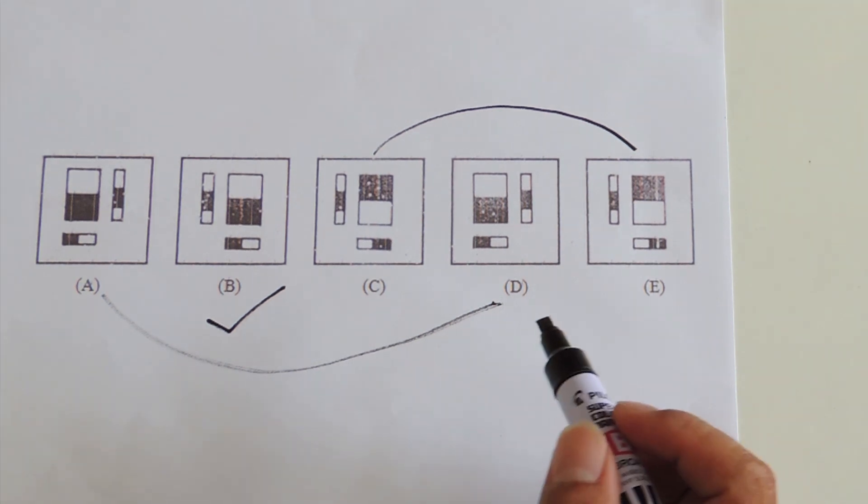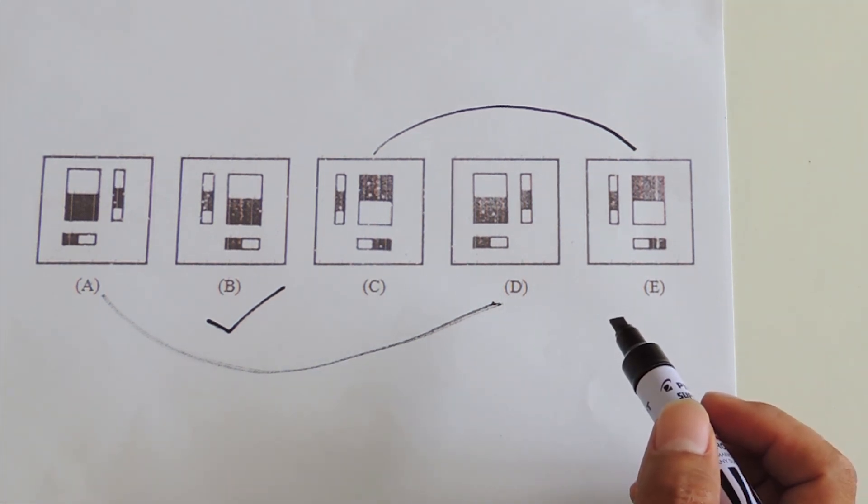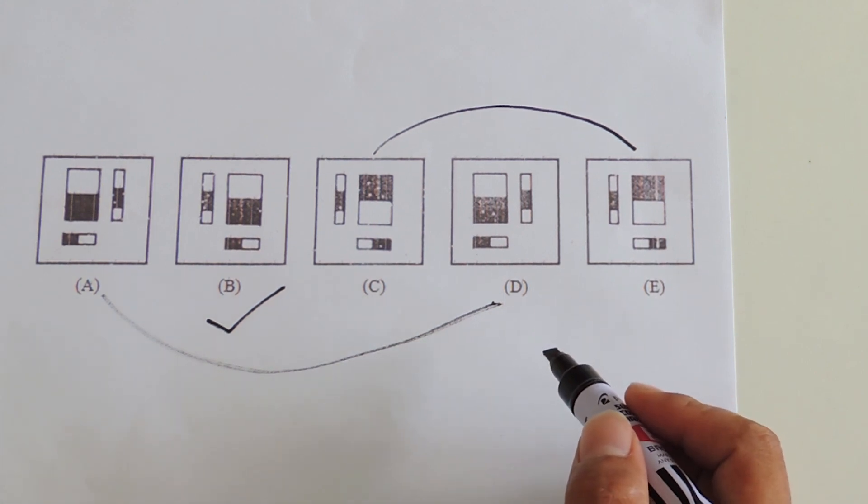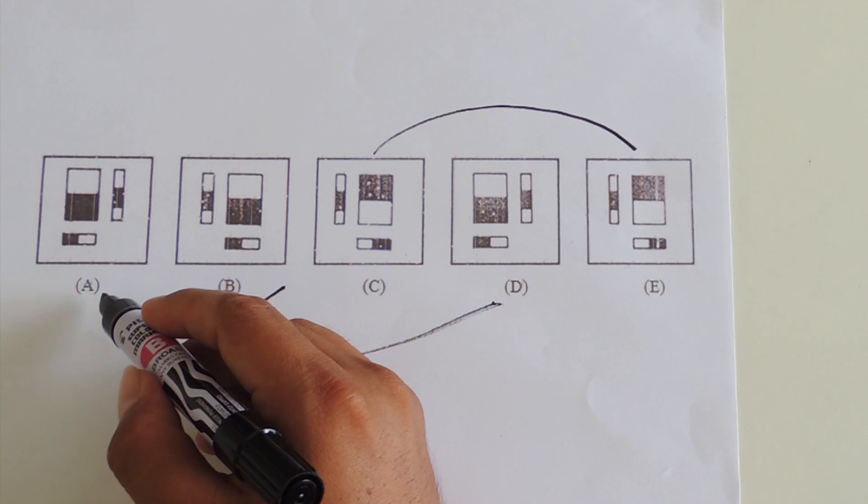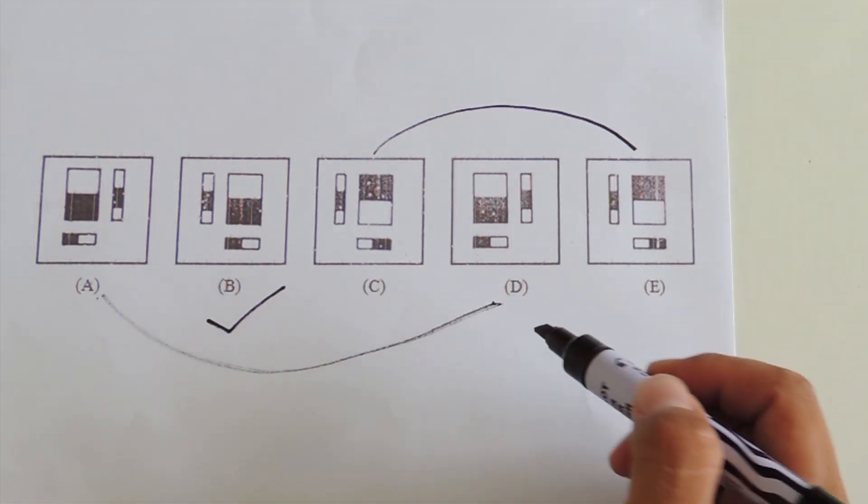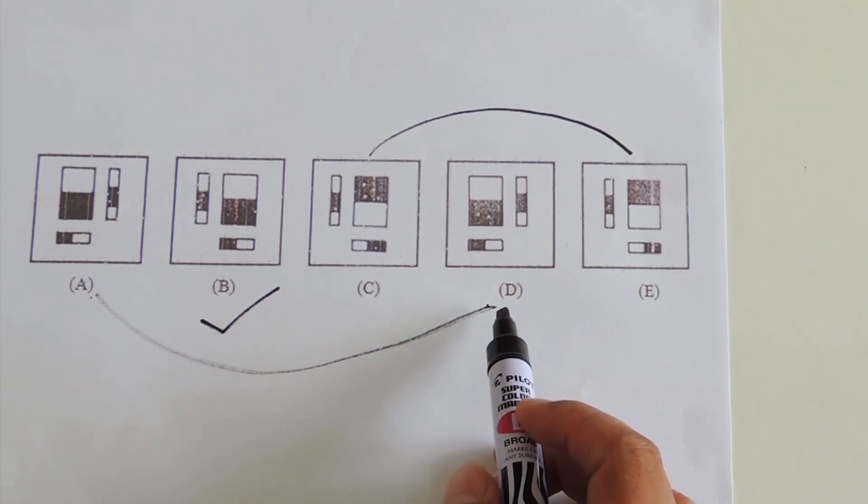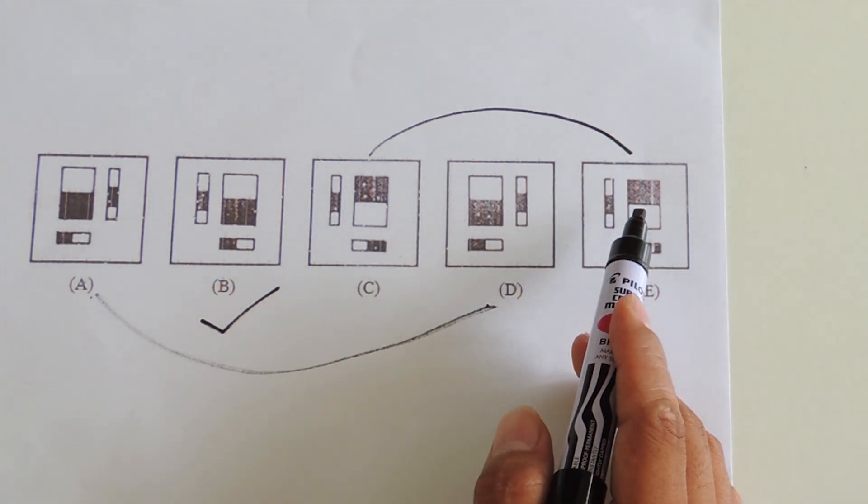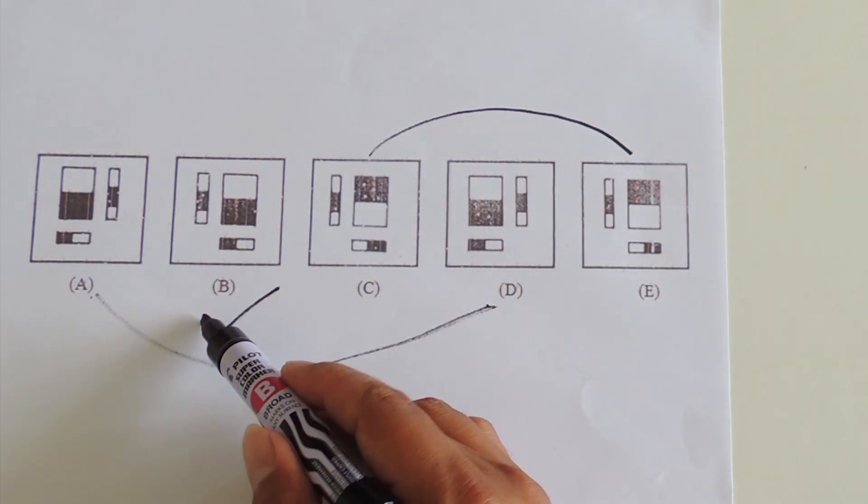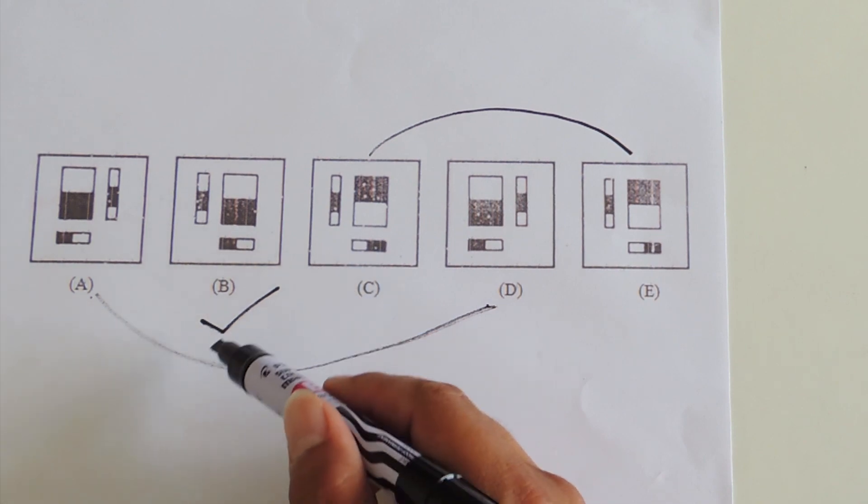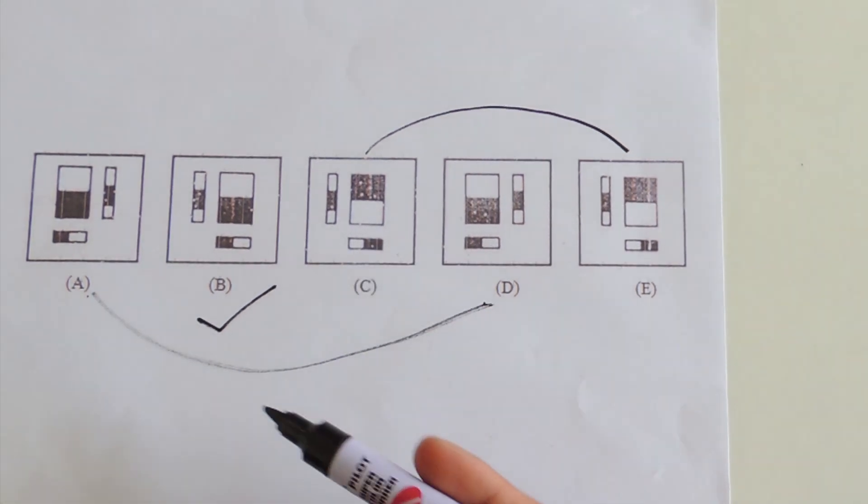Although it's not an absolute strategy, figure pairing could be applied when we have two sets of similar figures. For example, if A and D are equal, and C and E are equal, that leaves option B as the odd figure among the five options.